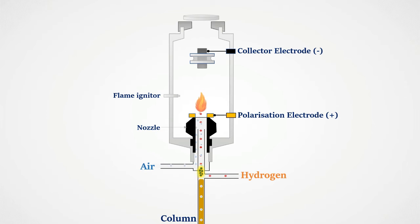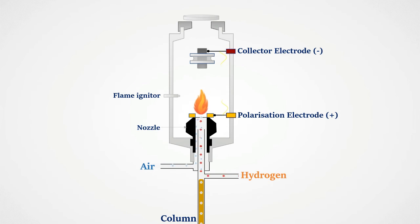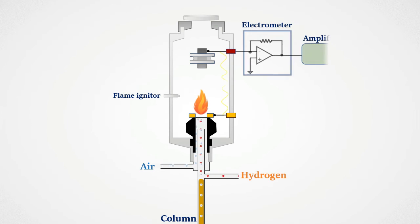When an organic compound is mixed within the hydrogen flame, mainly carbon ions are generated. And a current is produced between the electrodes proportionally to the amount of organic compound present. This current is measured with an electrometer, amplified into proper voltage, and fed into an integrator.